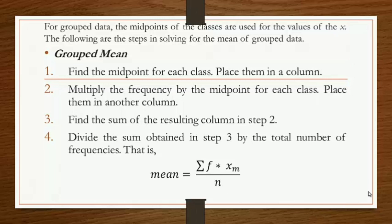For grouped data, the midpoints of the classes are used for the values of x. First, find the midpoint for each class and place them in a column. Second, multiply the frequency by the midpoint for each class and place them in another column. Third, find the sum of the resulting column from step 2. Last, substitute it in the formula, where F stands for frequency and x sub m stands for the midpoints of each class.